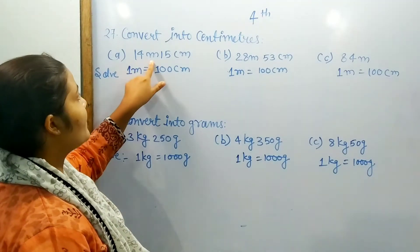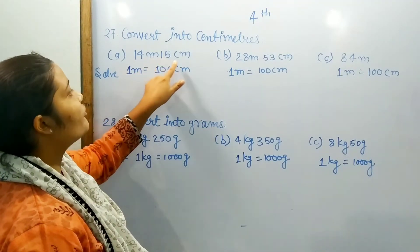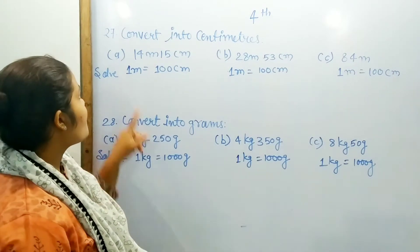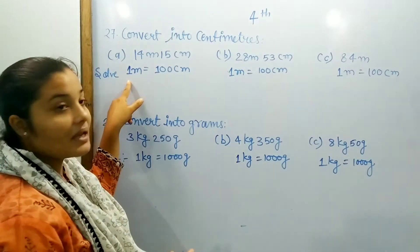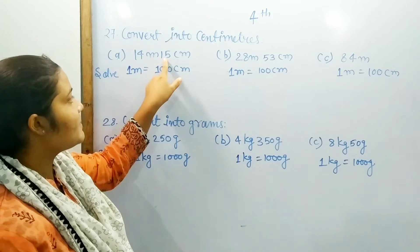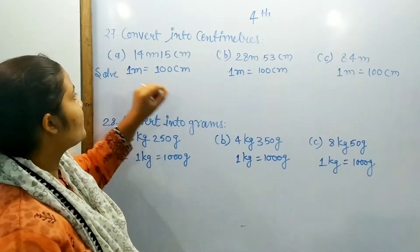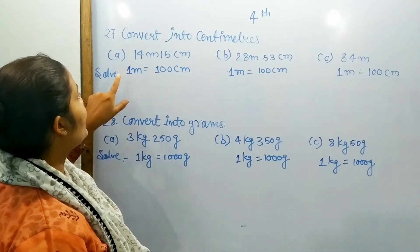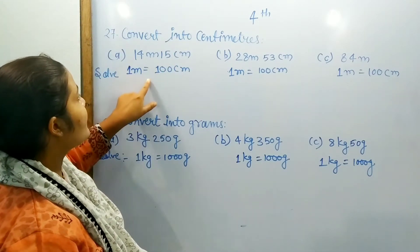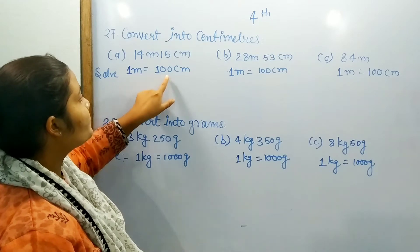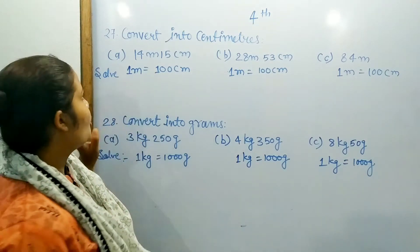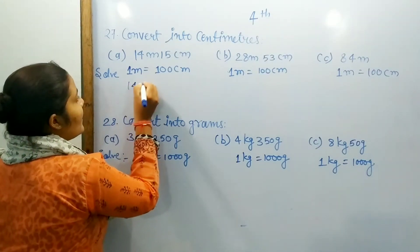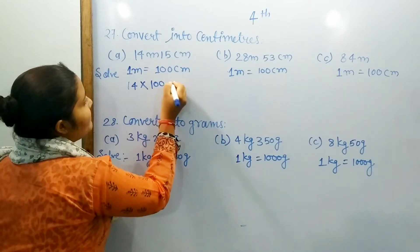Now, we have 14 meters and 15 centimeters. Let's start with 1 meter and 30 centimeters. We have to convert into meters. So, what is 1 meter? 100 centimeters. So, in 40 meters, we will convert into 100.